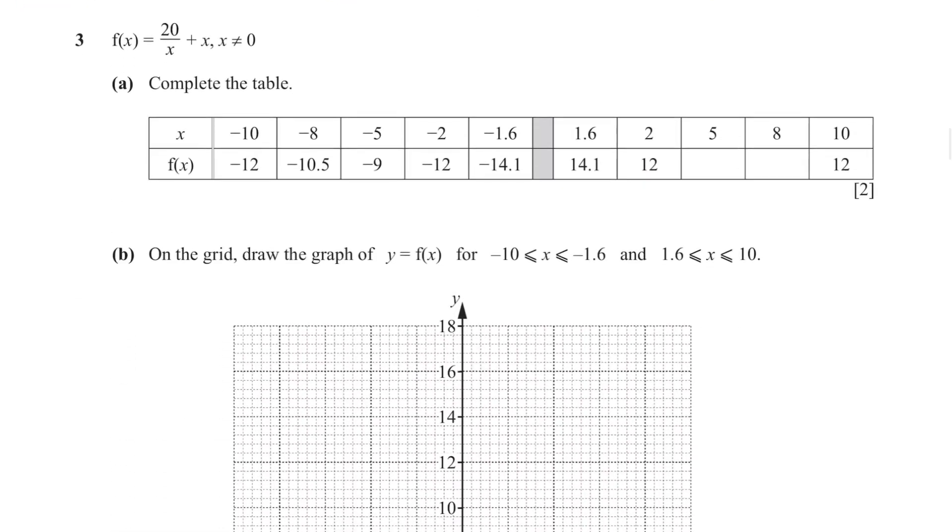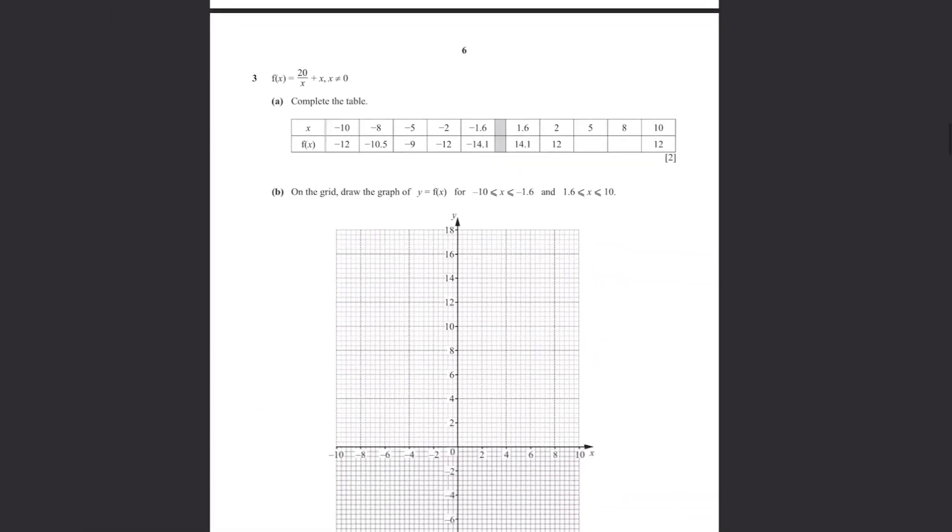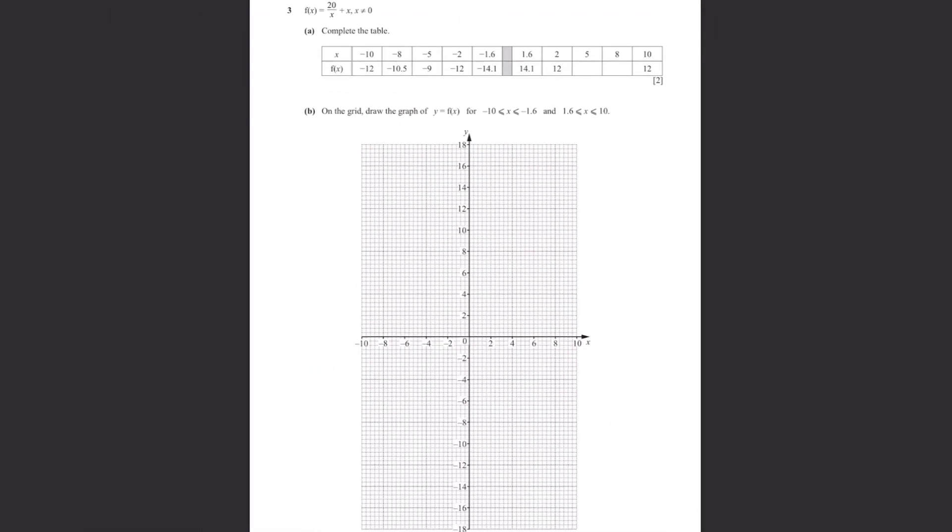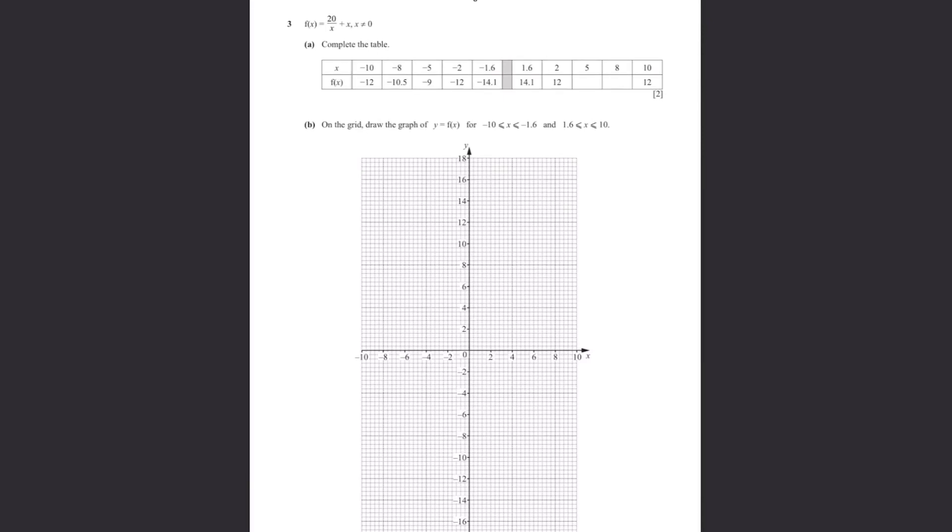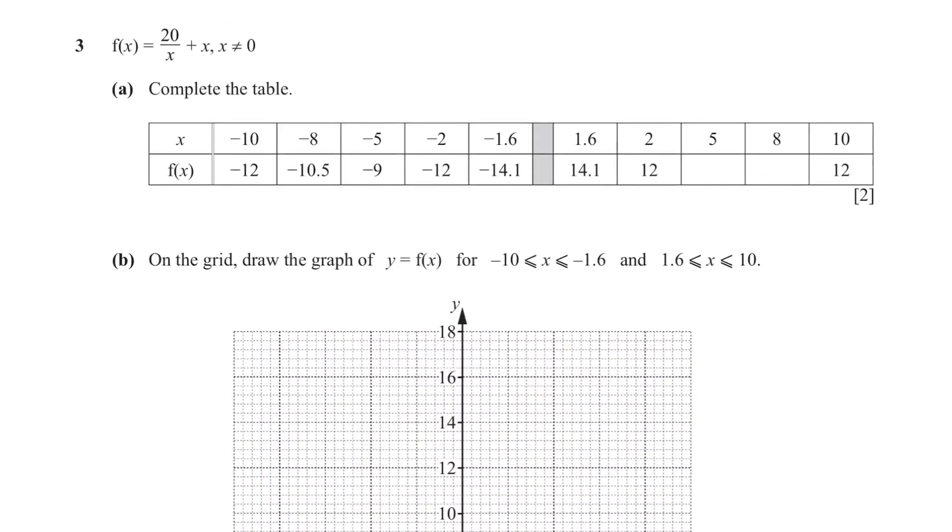Question 3. Okay, we got one of the most popular questions here. This one is very likely to come out in your exams so you need to master this question. f(x) equals to 20 over x plus x and x is not equal to 0. Part A. Complete the table. This is simple. Just put the value of x, use your calculator to calculate it. For this, it's 20 divided by 5 plus 5 so it's 9. Then 20 divided by 8 plus 8, 10.5.